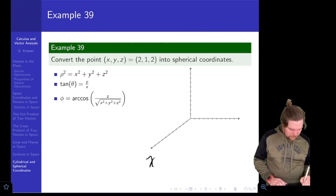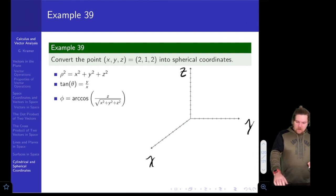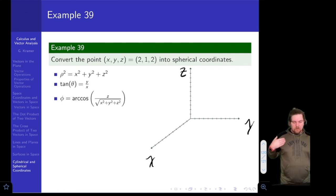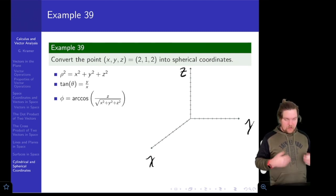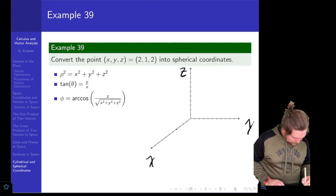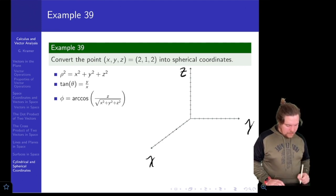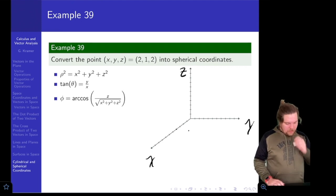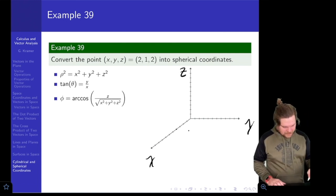I'll label the axes x, y, and z, then plot our point. We're going to come over 2 on the x-axis, 1 on the y-axis, and 2 on the z-axis. Using a scale where each tick mark is a half, that means 4 tick marks on the x-axis, 2 on the y-axis, and 4 on the z-axis.